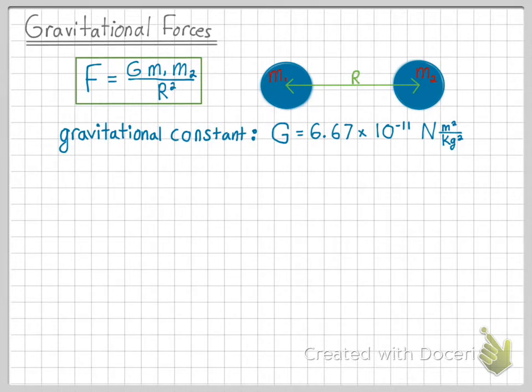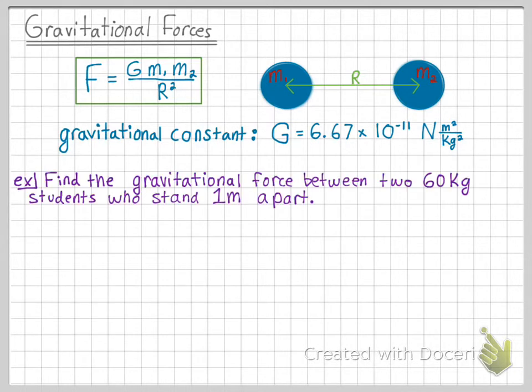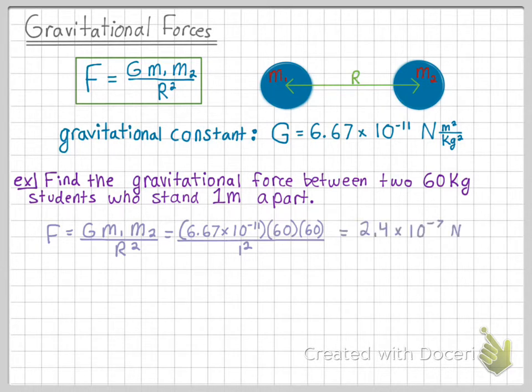So let's do an example. We want to find the gravitational force between two 60 kilogram students who stand one meter apart. We know that both of our masses are going to be 60, and the distance is going to be one meter. G is always 6.67 times 10 to the negative 11th. When we plug in our numbers, we see that this gravitational force is equal to 2.4 times 10 to the negative 7 newtons. This is a pretty small force and is the reason we don't find ourselves being pulled into our surrounding neighbors, since these are pretty negligible forces.